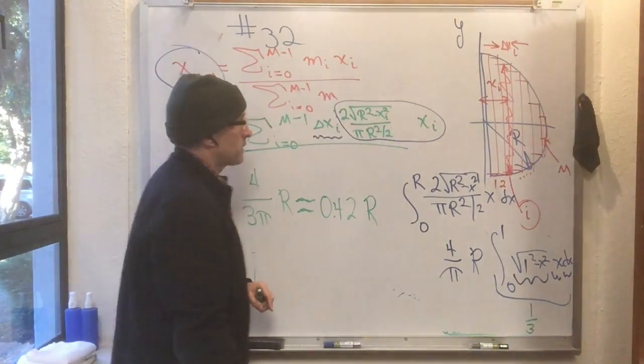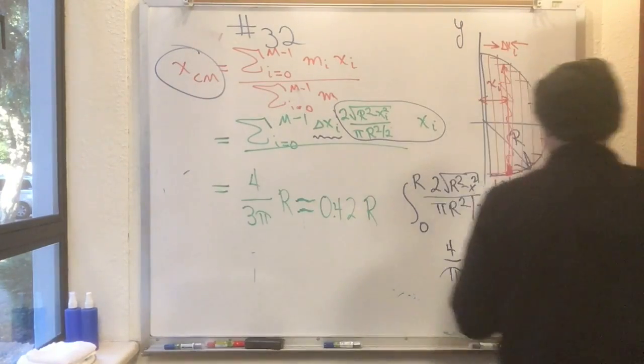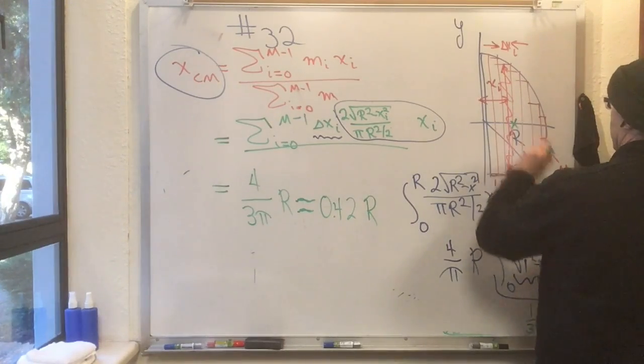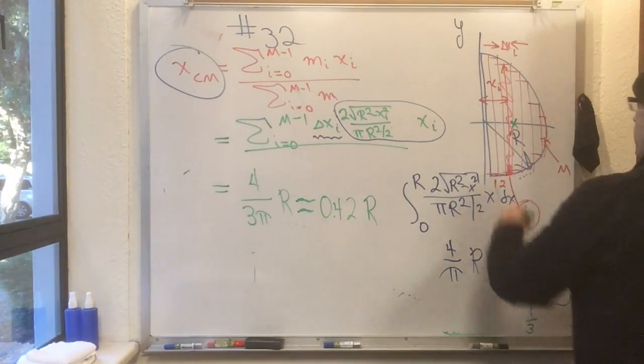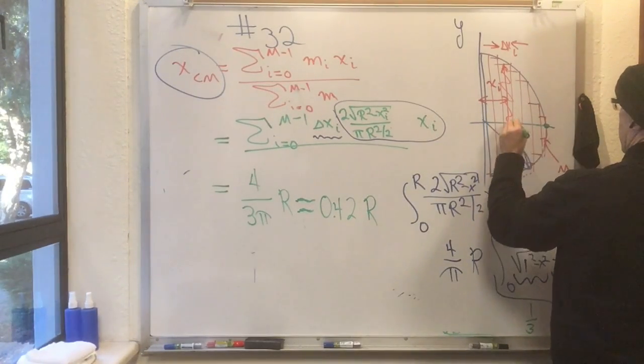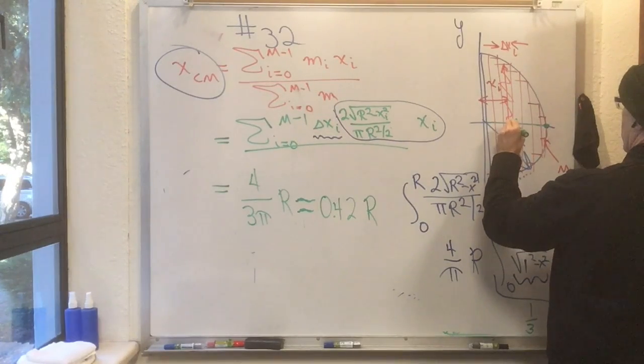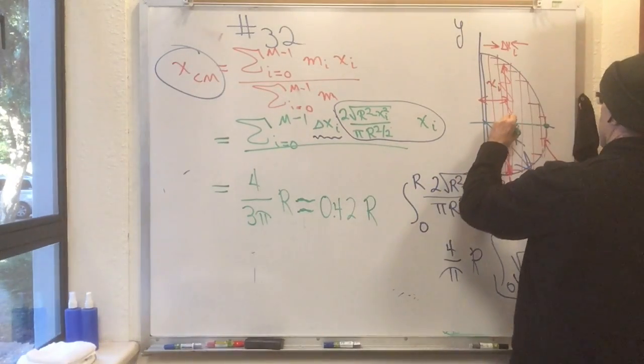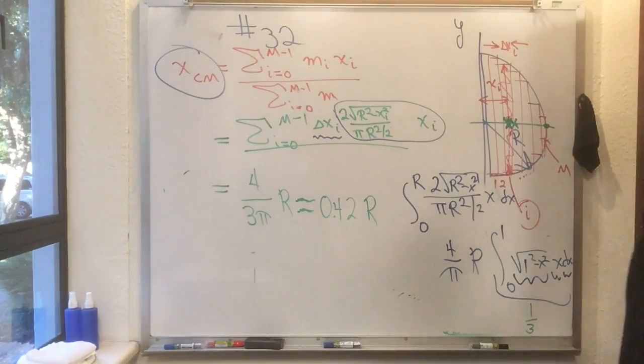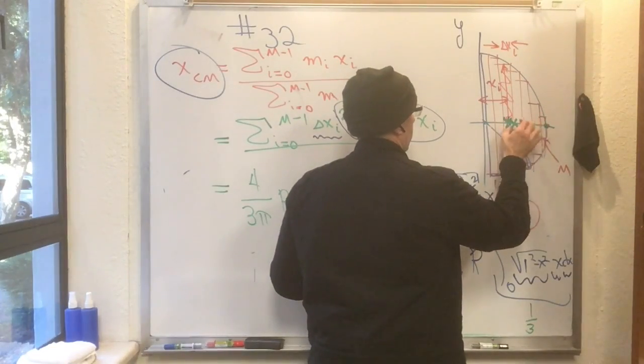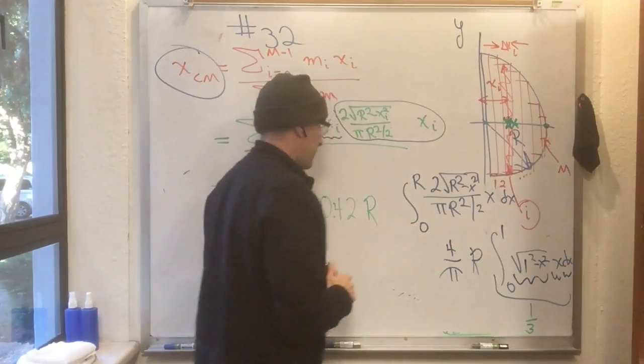Now, what does that tell us? That tells us that the center of mass of this plate is not, it's obviously not all the way halfway out to r. It's about, all the way out to r would be there. Halfway out to r would be there. It's about 4 tenths of the way, 4 fifths of the way to there. About 4 tenths of the whole way across the plate. 0.42 actually. So, this x value of the center of mass of a half a plate is at about 0.42, 42% of the way to the edge.